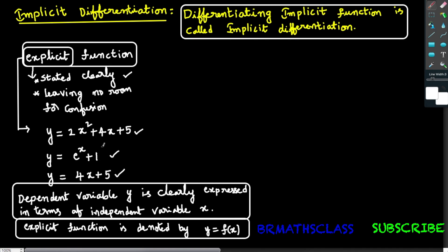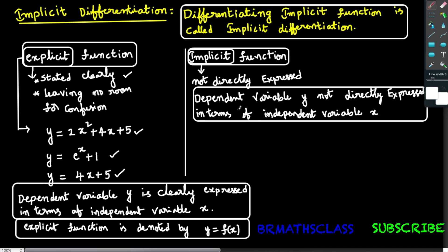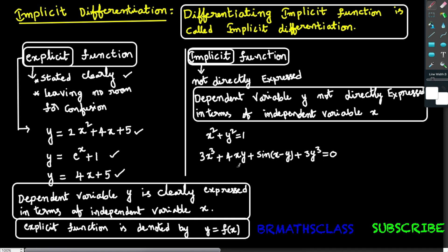Now we will try to understand what is implicit function. What is the general meaning of implicit? Implicit means not directly expressed. Implicit function is a function in which dependent variable y is not directly expressed in terms of independent variable x. Observe this example: x squared plus y squared equal to 1. In this, dependent variable y is not directly expressed in terms of x — that's why x squared plus y squared equals 1 is called an implicit function. The second example is also an example of implicit function, as dependent variable y is not directly expressed in terms of x.